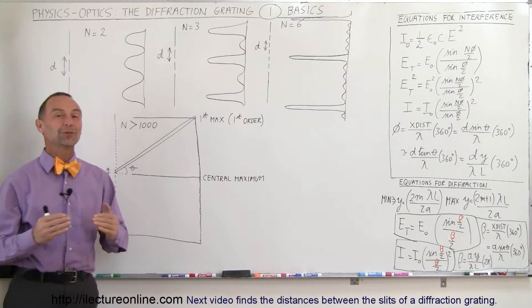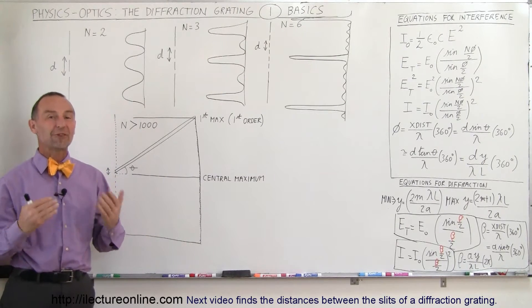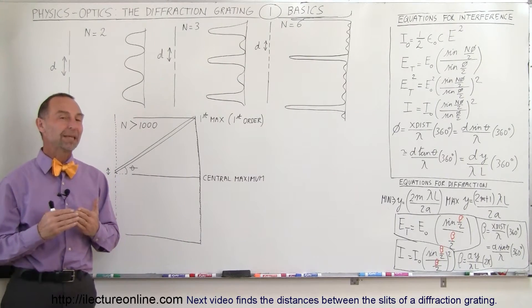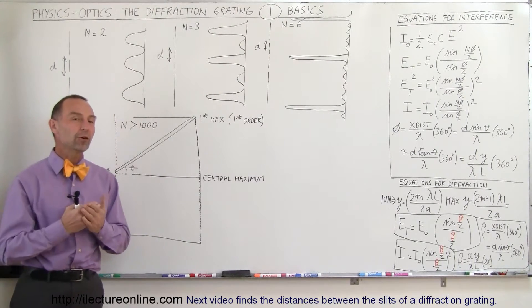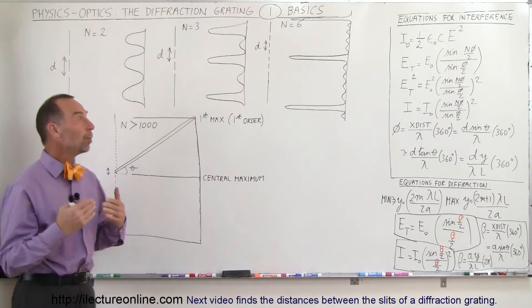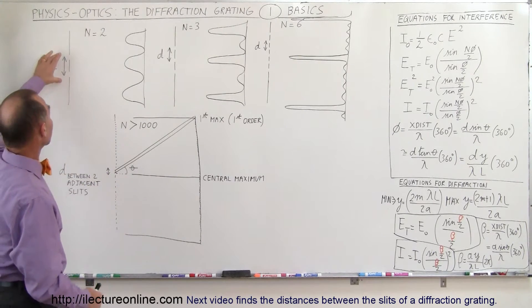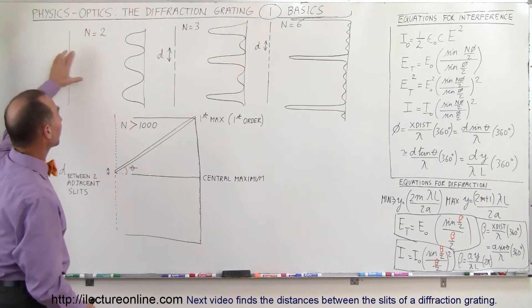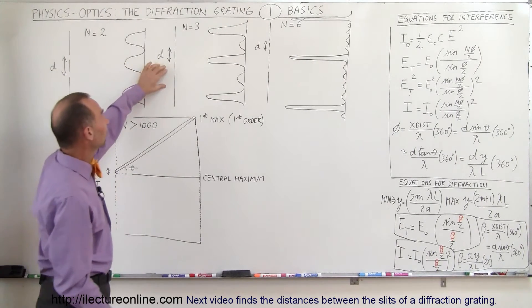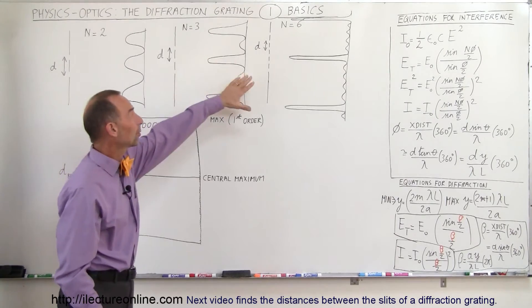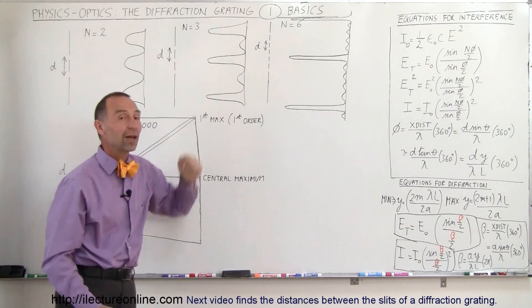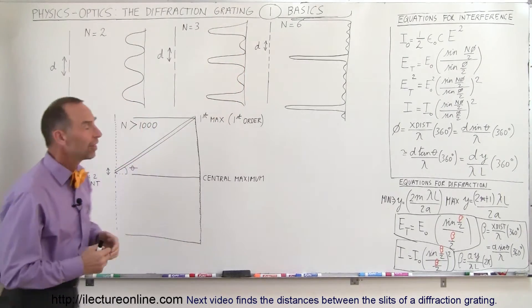Welcome to ElectronLine. Now we're going to talk about the diffraction grating. In previous videos we saw multi-slit situations where we had cases with two slits, three slits, or more than three slits. Here's an example of six slits.